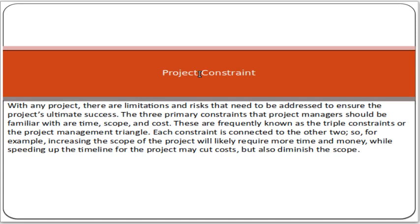Scope, time, and cost are called the triple constraint because these three constraints are dependent on each other. If there is any change in one constraint, it will impact the others. For example, a change in time will impact cost, and a change in cost will impact both time and scope. The triple constraint refers to these three interdependent constraints.